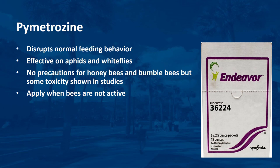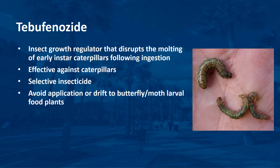This reduced-risk pesticide disrupts the normal feeding behavior of aphids and whiteflies on ornamentals. The Endeavor label states no precautions for honeybees and bumblebees. However, some toxicity has been observed in field studies. As a caution, apply pymetrozine in the evening, night, or early morning when bees are not visiting blooming plants. Since this product is selective for aphids and whiteflies, there should be no impact on other pollinators or natural enemies. Tebufenozide is an EPA-reduced-risk IGR that disrupts the molting of early instar caterpillars following ingestion. It is selective and specific to caterpillars, labeled for use on ornamentals for a broad range of caterpillars, and is non-toxic to bees and most natural enemies. However, caution should be used to avoid application or drift to larval food plants of butterfly and moth pollinators.